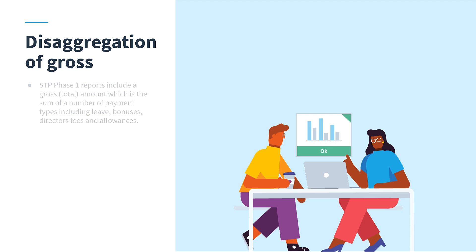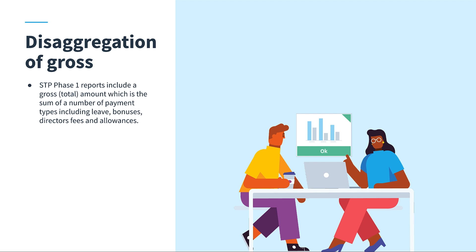With Phase 1 of STP, the gross amount sent to the ATO contained different types of earnings depending on an employee's income type. These include items like paid leave, bonuses, director's fees, and allowances.